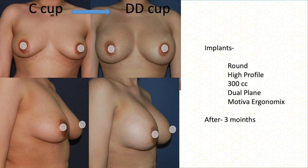Again C cup with slightly more saggy, grade one sagging, but it is possible to avoid breast lift in this patient. I used a 300 cc high-profile dual-plane Motiva implant. This is the result after three months — she went from C cup to double D cup.